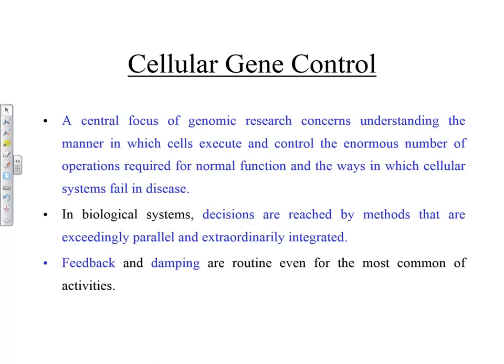In biological systems, decisions are reached by methods which are exceedingly parallel and extraordinarily integrated. So many different things have to kick in: the right protein has to be expressed in the right cell at the right time. As with any robust system, you can expect that for a biological system there will be feedback and damping — these have to be routine for the most common activities. Like if the weather is very hot, you sweat, your perspiration evaporates, and that produces cooling — there is a feedback mechanism.